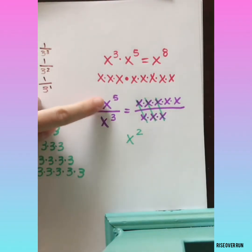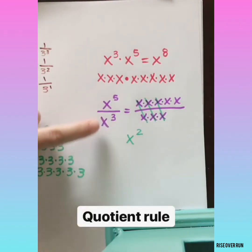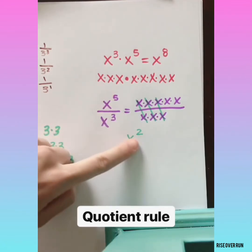So you can see a shortcut here when you're dividing with the same base and you have exponents. You can keep the base and subtract the exponents.